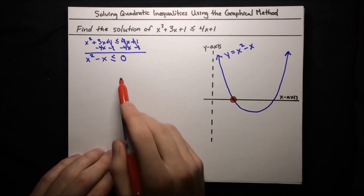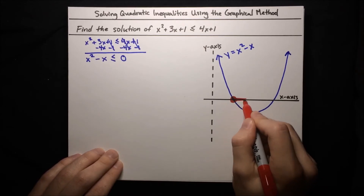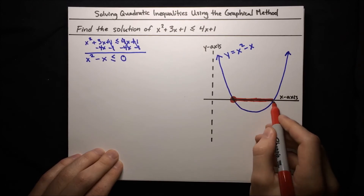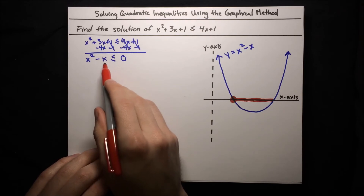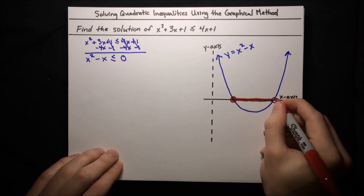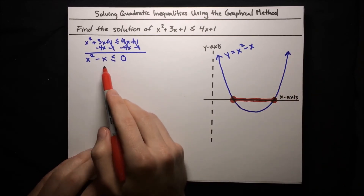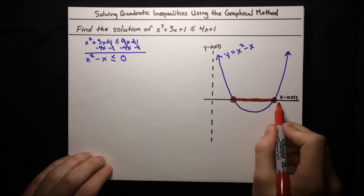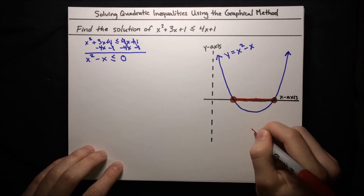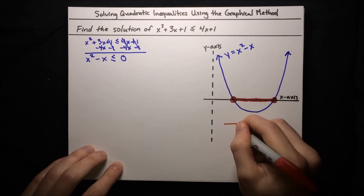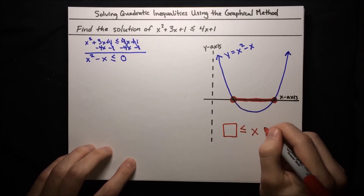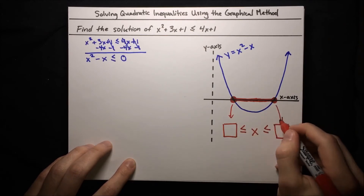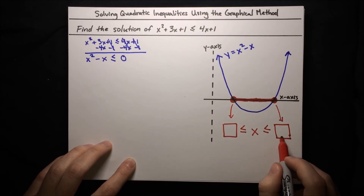Everything underneath between the roots has negative y values — that's what we want. We want all the y values that are less than or equal to 0. When we hit the next root, the y value is 0, which satisfies our inequality, so we include it with a closed circle. But once we pass that root, y is positive again — no longer what we want. So we're interested in the x values between these two roots: x is greater than or equal to the left root, and x is less than or equal to the right root.